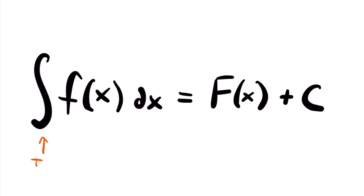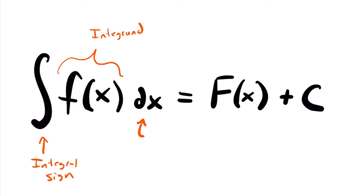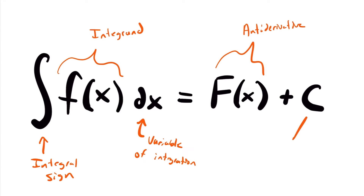Let's identify all the different parts of an indefinite integral. The integral sign is this elongated S symbol. The part inside the integral is known as the integrand. The dx here is the differential of x, but it's more useful to think of it as the variable of integration — it tells us we're finding the antiderivative with respect to x. Then we have our antiderivative, and finally C is called the constant of integration.